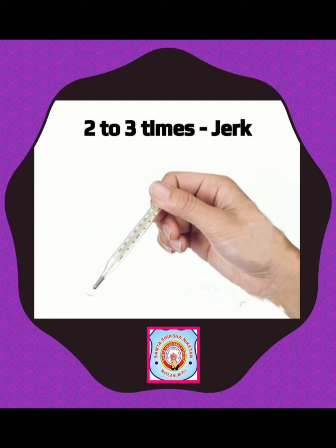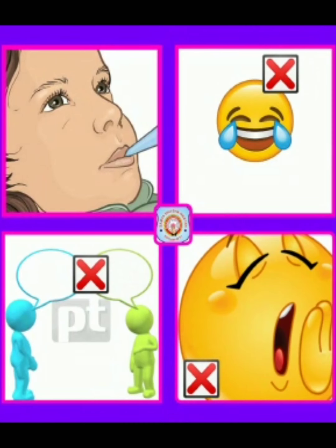Otherwise, the delicate bulb may break. While the thermometer is in the mouth, don't laugh, talk, or yawn. This is to prevent the breakage of the thermometer, which may release mercury — and mercury is poisonous and fatal to life.